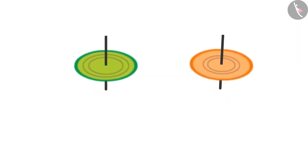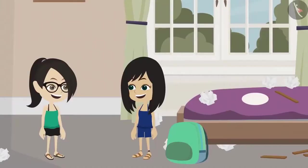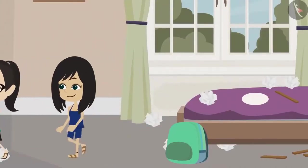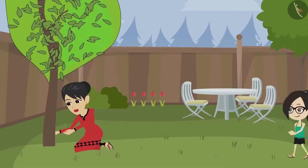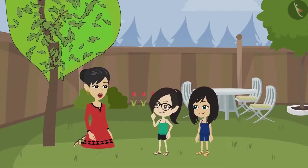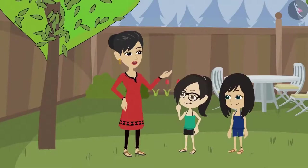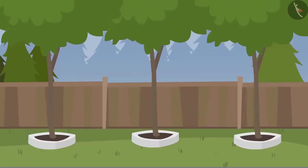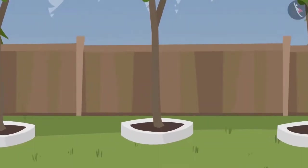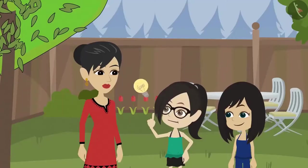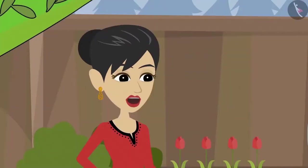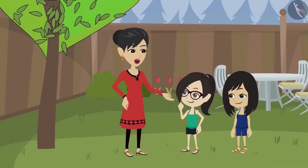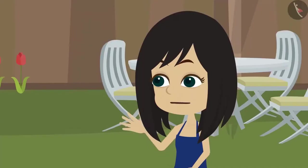Let us spin our tops. Vandana, come to the garden. I have to draw a circular mark around this tree. Why, mummy? When a circular pit is made around a tree the water given to it remains around the tree and does not flow out. See, just like it has been made around the rest of the trees. We will help you.